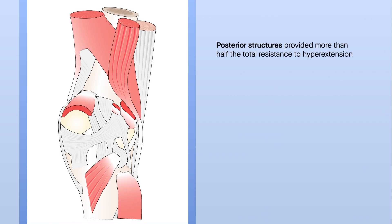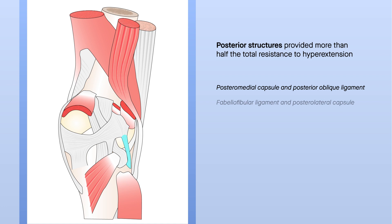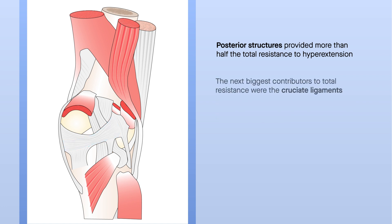Results showed that the posterior structures of the knee provided more than half the total resistance to hyperextension. These included the postural medial capsule and posterior oblique ligament, the fabelofibular ligament and postural lateral capsule, and the oblique popliteal ligament. The next biggest contributors to total resistance were the cruciate ligaments, followed by medial and lateral structures.